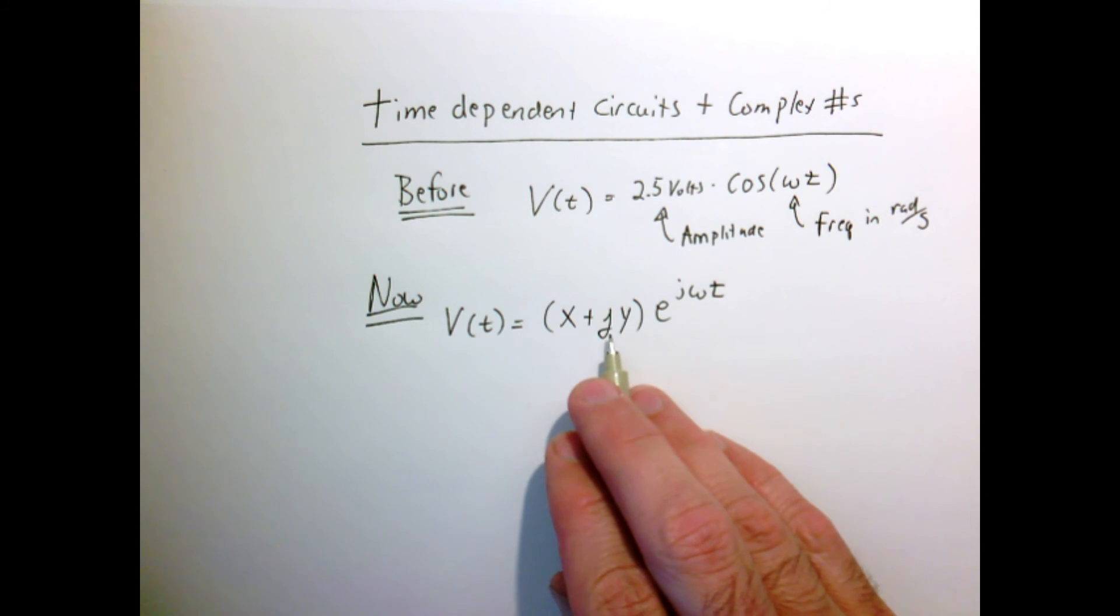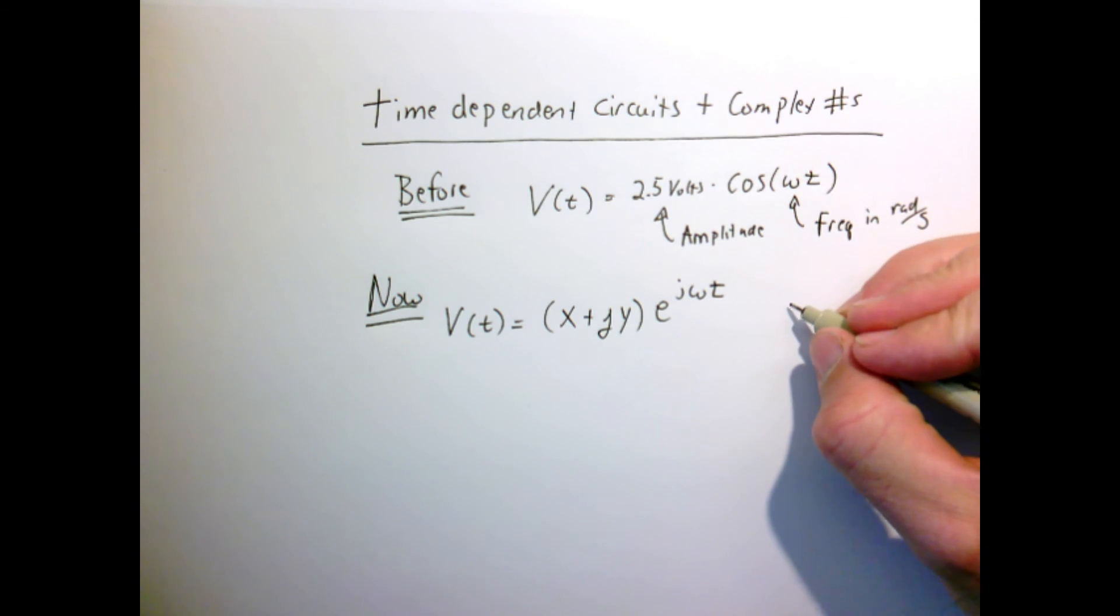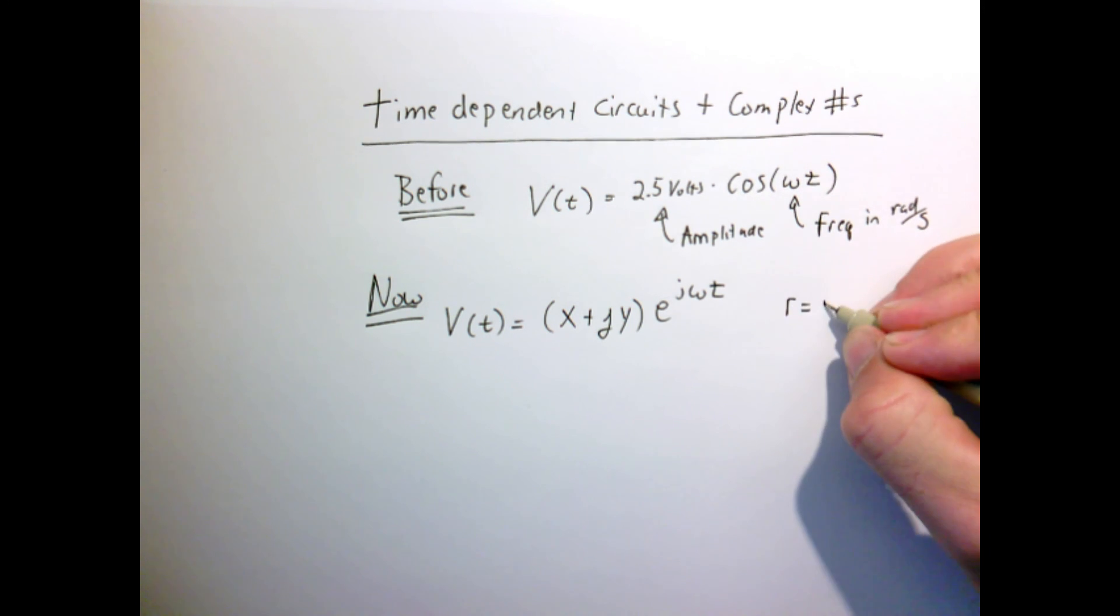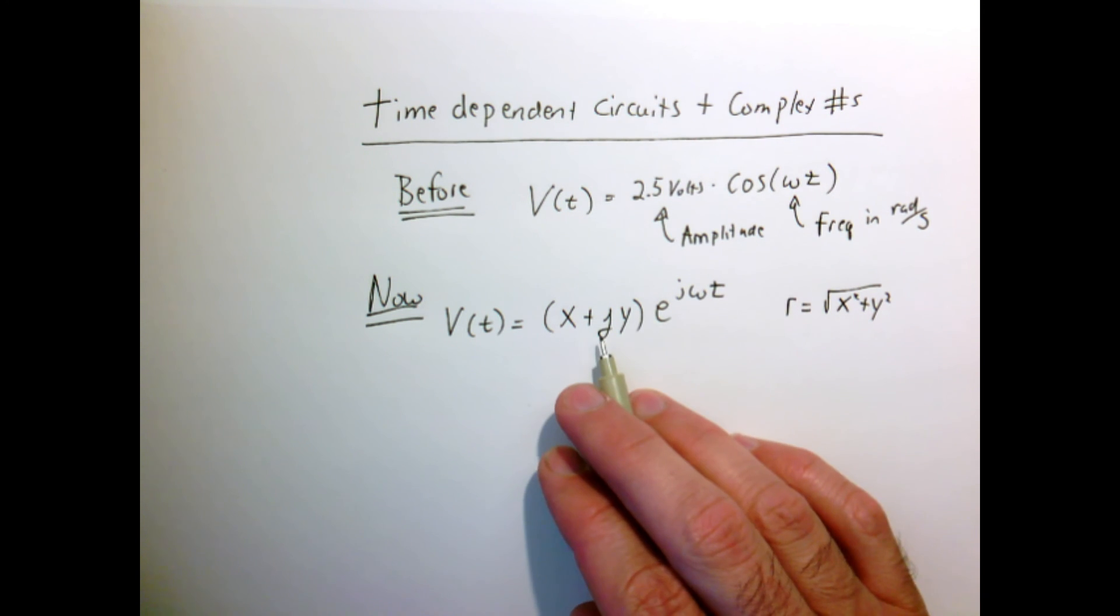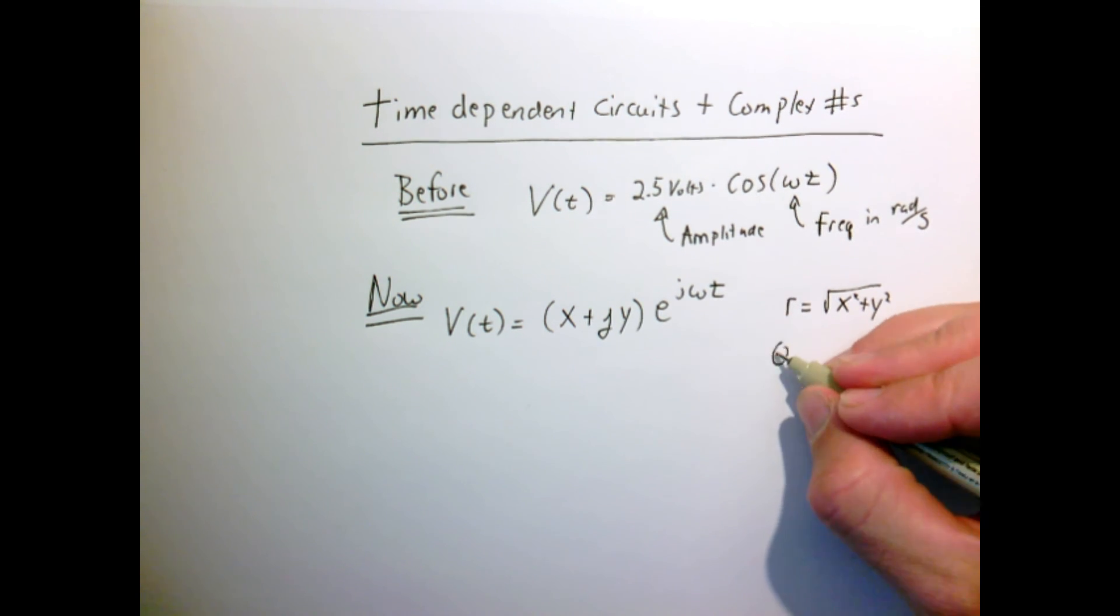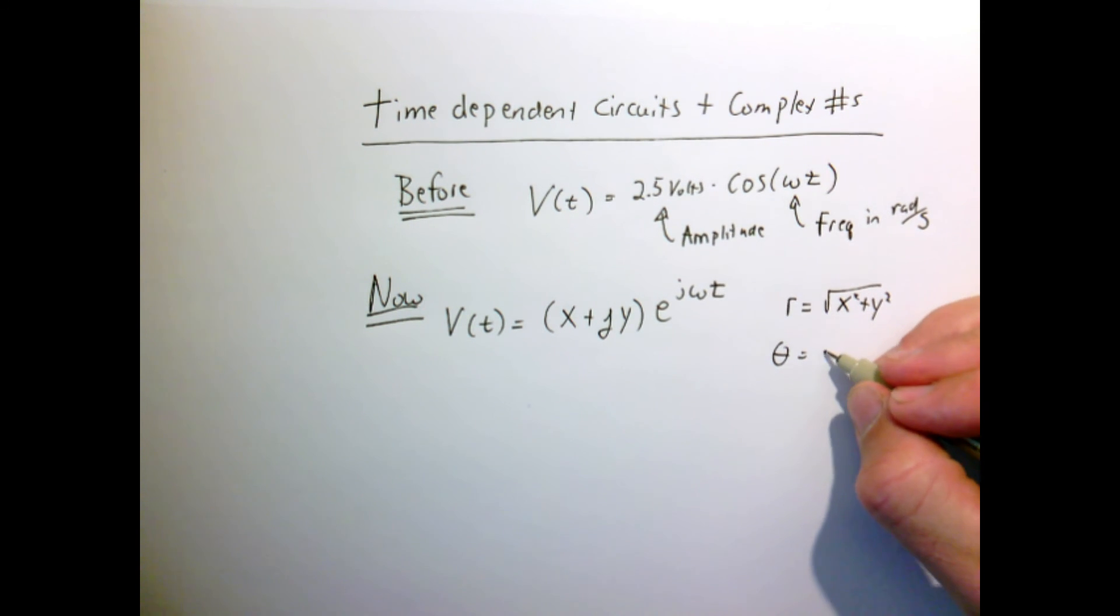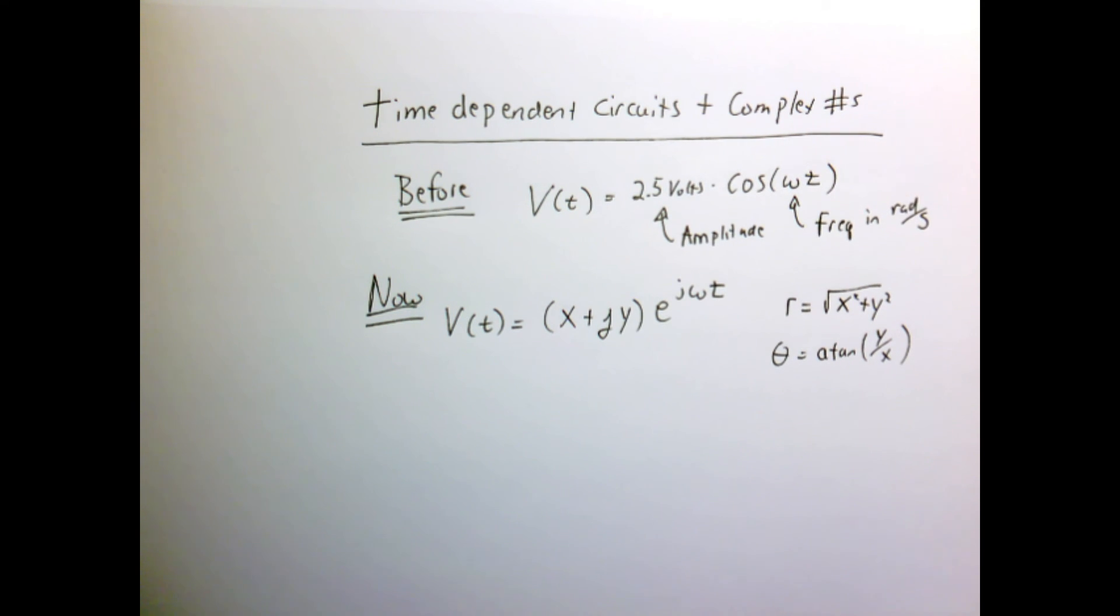So now let's remember our complex number out here. We could also use the relationships that the magnitude of the complex number, the distance from the origin, is equal to the square root of x squared plus y squared, and that the angle with the real axis is nothing more than the arc tangent of the imaginary part over the real part.